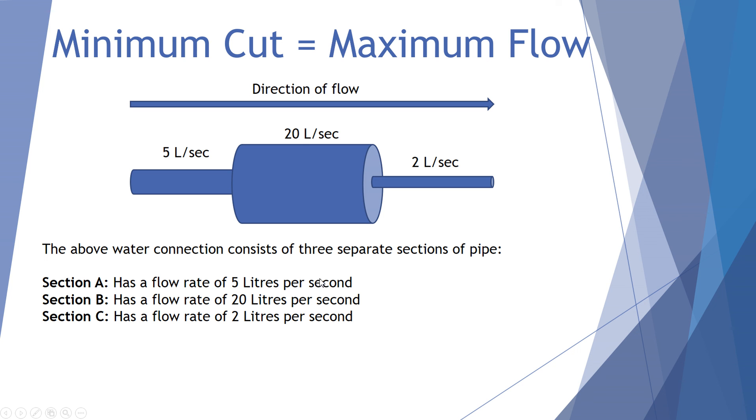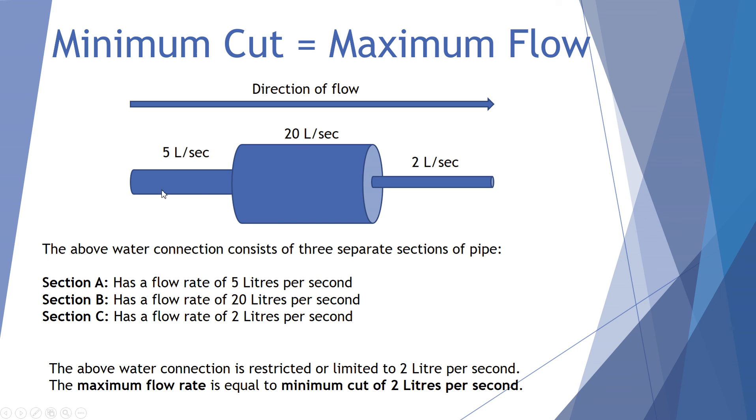Okay, so section A has a flow rate of 5 litres per second. Section B, 20 litres per second. And section C has a flow rate of 2 litres per second. Now that system, even though we can put 5 through this first section and 20 through this section, it's actually restricted by the lowest value. So if we were again to draw cuts, this would have a capacity of 5. Cutting through here would have a capacity of 20. This cut would have a capacity of 2.